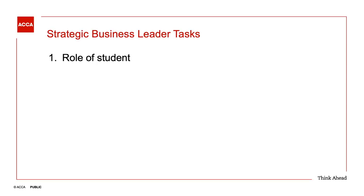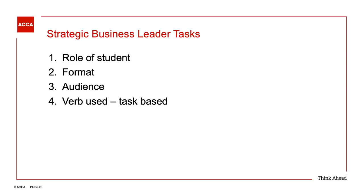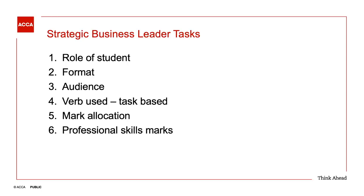The six steps are: What role are we being asked to play? What format are we required to write our answer in? Who are we addressing, i.e. who is the audience? What verbs are being used? How many marks are available for this part of the question? And what are the professional skills marks being awarded for? If we take these steps before writing any answer plan, we should minimise any chances of making mistakes.